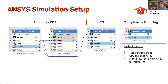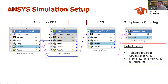Both simulations progress simultaneously, and you're looking for a converged solution. During the coupling, data is transferred to and from the CFD and the structure solver. The temperature variable is mapped from the structure side to the CFD, and the heat flow rate comes from the CFD to the structures. These data transfers take place for every coupling iteration until the solution converges — meaning the flow results and structural results no longer change.